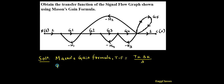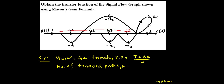Now, what is k? k is nothing but the number of forward paths. So let me identify the number of forward paths. If I look closely, starting from the input: G1, G2, G3, G4, traversing till the output — this is the only forward path. So the number of forward paths is 1.